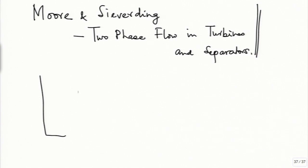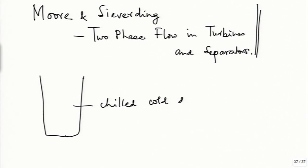It is difficult to demonstrate supersaturation in a laboratory, but I recommend the following simple experiment and I am sure you will succeed if not in the first attempt then in the second or definitely in the third. Take a glass or a beaker and clean it absolutely neatly to the extent possible. Then take a chilled cold drink — a cola works better for some reason — and pour it in almost up to the rim.